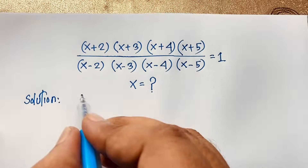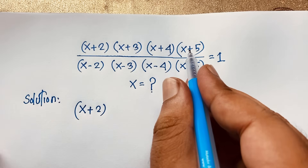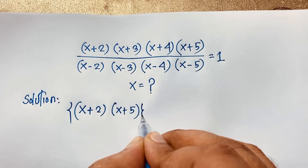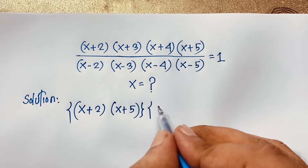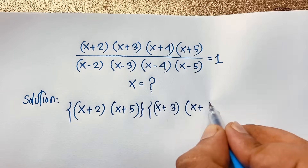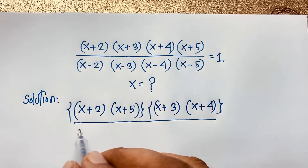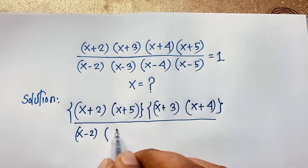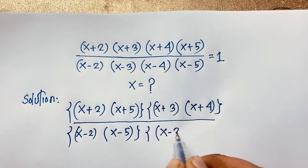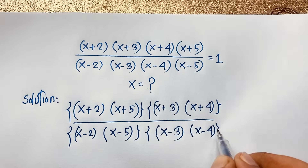Our question will be x+2, but I take this value x+5 here — (x+2)(x+5) in a bracket. Then I take (x+3)(x+4) in a bracket. Then in the denominator: (x-2)(x-5) in a bracket, and here (x-3)(x-4).